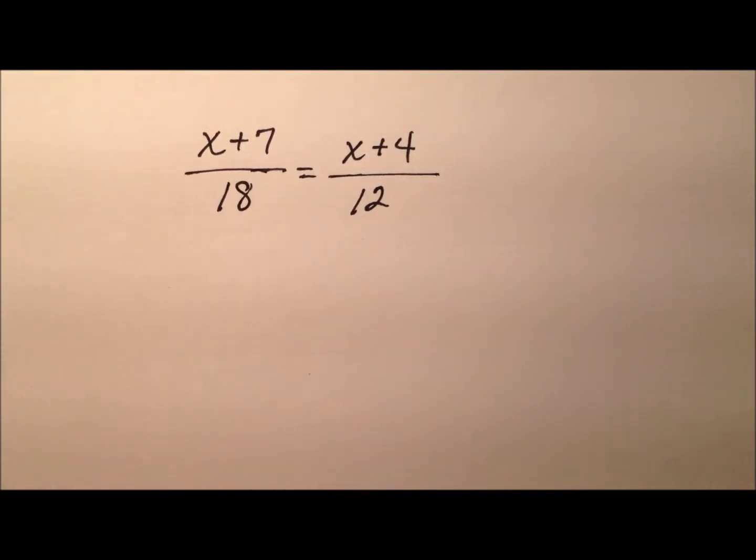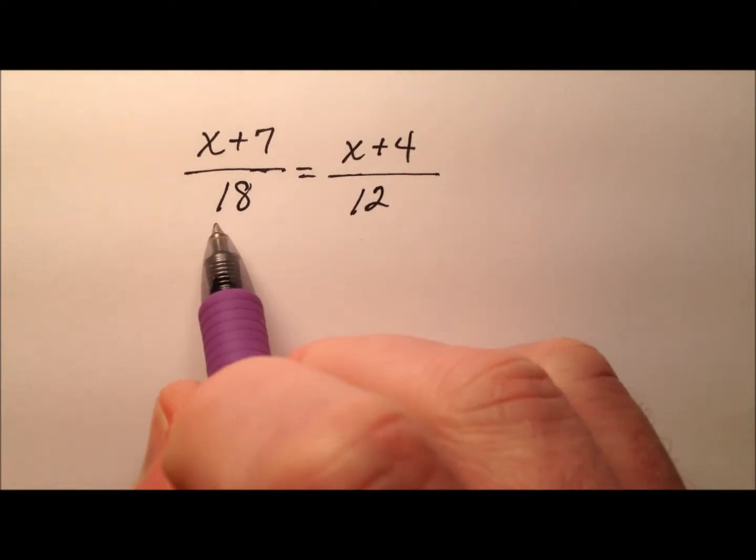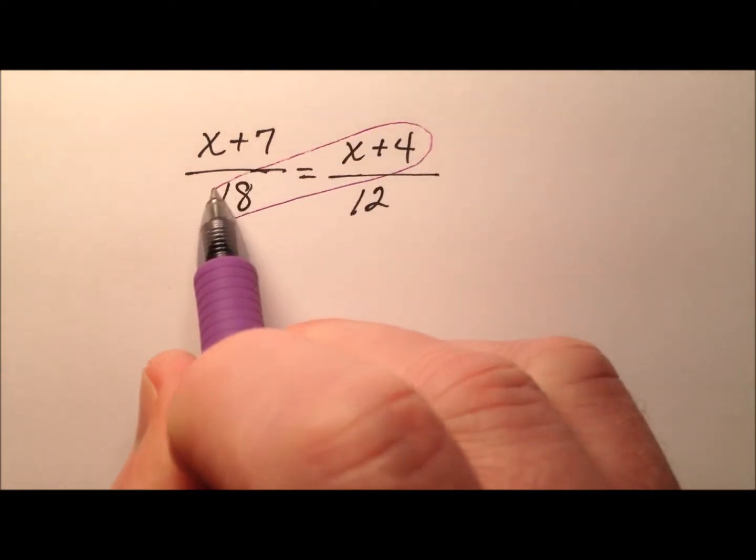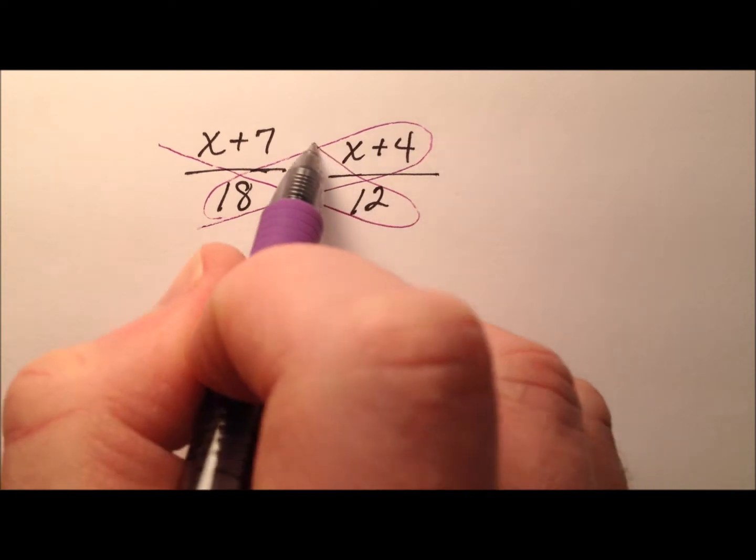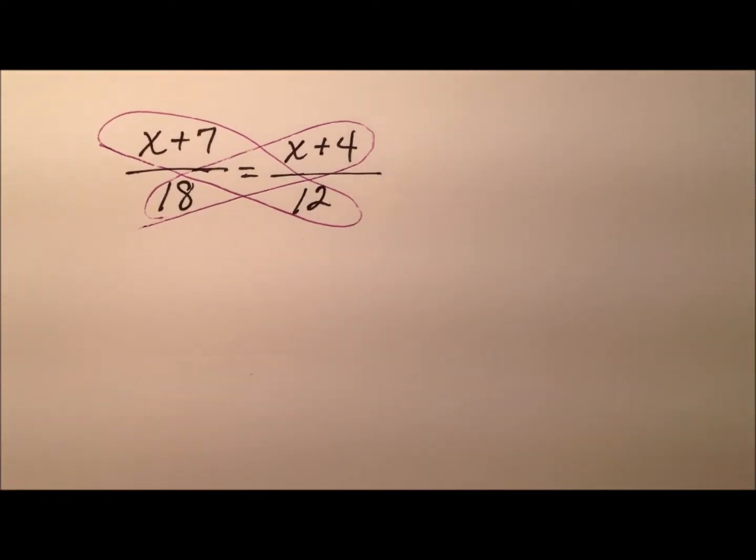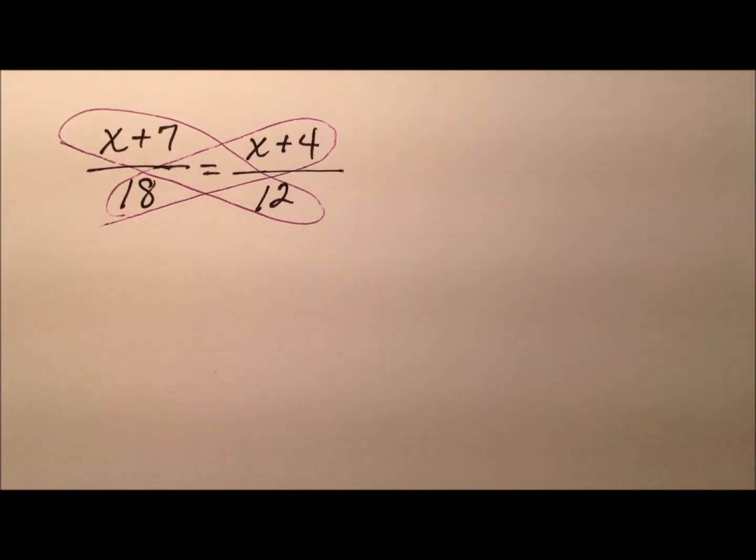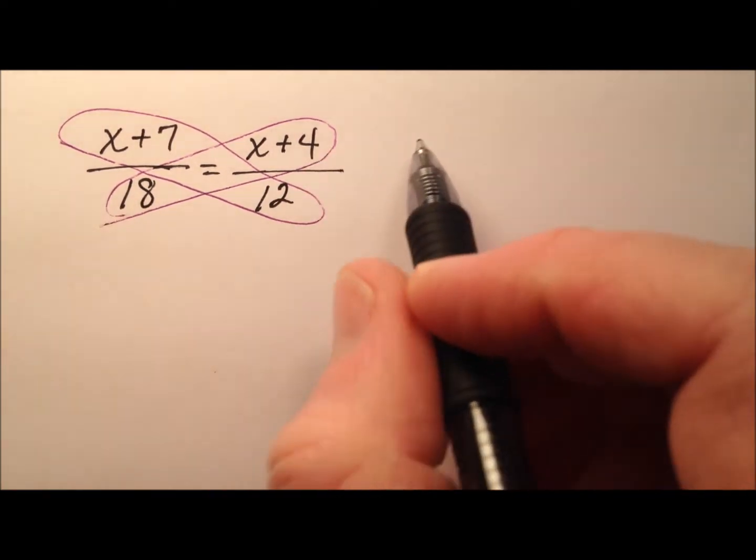Alright, so a nice property that we have for proportions is that we can do cross products and set them equal to each other, and that's the way we can solve this nicely. It doesn't matter which one we put on the left side and which one we put on the right side, so maybe let's go ahead and do this one.